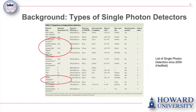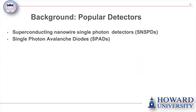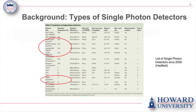Here are some of the single photon detectors — the two common ones we want to highlight are the SPAD (Single Photon Avalanche Diode) and the SNSPD (Superconducting Nanowire Single Photon Detector). SNSPDs are very popular right now, but SPADs are popular as well. One important distinction is that superconducting nanowire single photon detectors require a very low operating temperature.